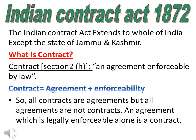The Indian Contract Act 1872 extends to the whole of India except the state of Jammu and Kashmir. As per Section 2(h) of the Indian Contract Act 1872, an agreement enforceable by law is called a contract.